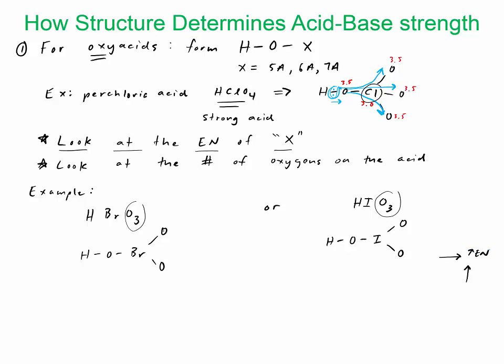That means this one is going to have a stronger pull on the electrons. The higher EN makes the bonded hydrogen weaker. Therefore, it dissociates better because of that shift in electrons. HBrO3 would be the stronger acid—bromine is 2.8 EN and iodine is about 2.5.